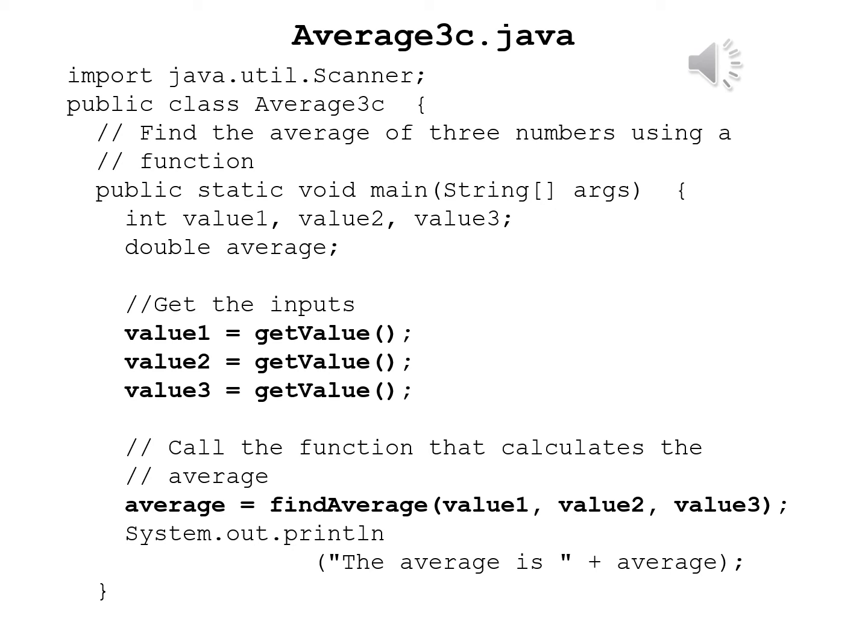You'll notice that after the comment get the values you see in bold: value1 equals getValue, value2 equals getValue, value3 equals getValue. Three calls to the same method. It's clearly going to save me a bit of writing if I'm using this many times.